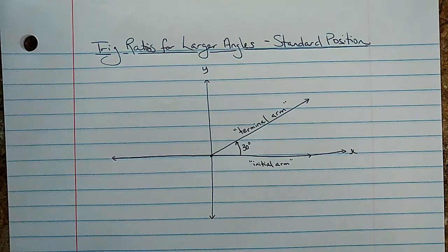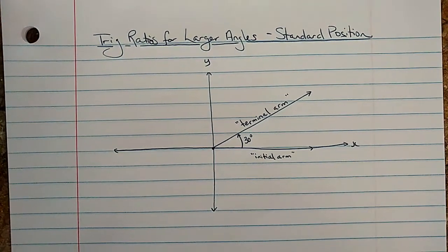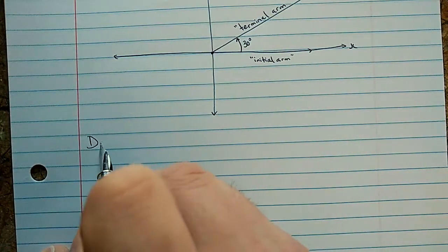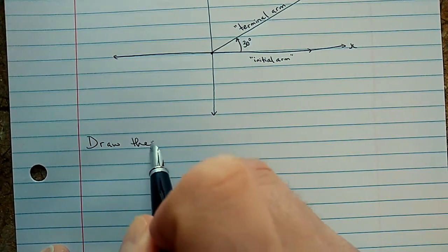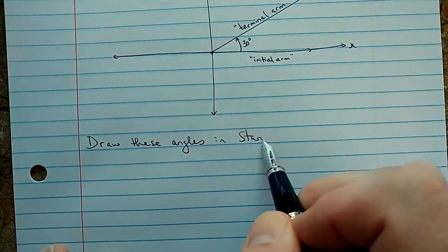So we're going to draw a bunch of angles like this, just to make sure that we understand it. And then I'll even show you one that is a negative angle. So let's start. I'll just have a little instruction here. Draw these angles in standard position.